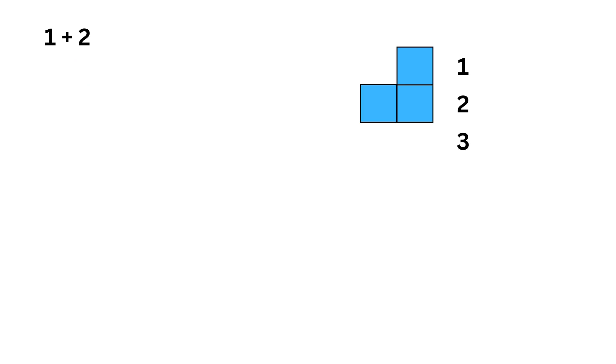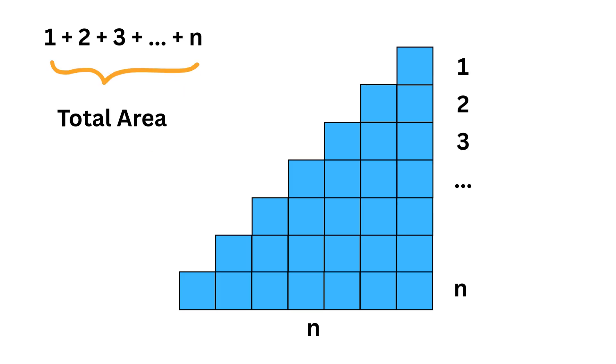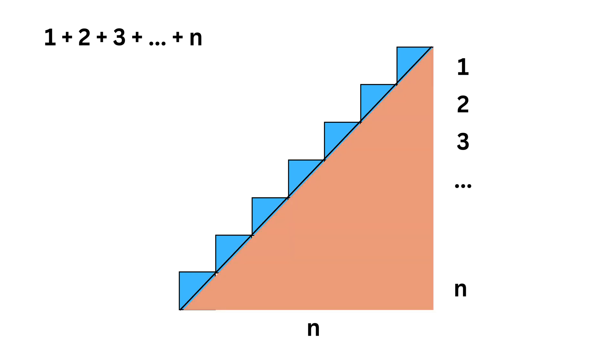Then in level three, draw three squares and write plus three. Keep doing it till we go to level n, where we make n such squares and write plus n here. So the total area of all these squares equal one plus two plus three and so on till n. Now cut this array along this hypotenuse so as to divide it into one large triangle and n small right triangles of side length one by one. These will be n triangles because we get one such triangle from each level.